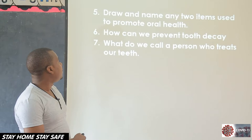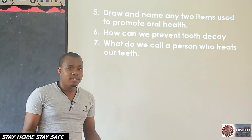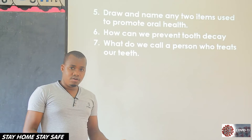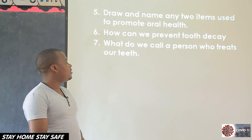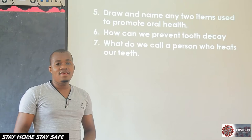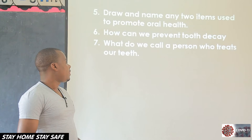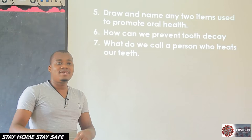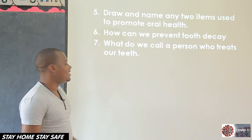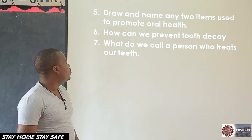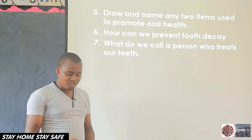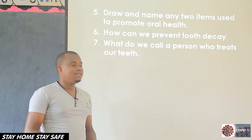Number five: draw and name any two items used to promote oral health. I expect someone to have drawn a toothbrush, toothpaste, dental floss, or a toothpick. Number six: how can we prevent tooth decay? By brushing teeth every day, or daily, or after every meal. You must also use toothpaste, because it is the one that kills the bacteria. What do we call a person who treats our teeth? That person is called a dentist. Can we spell dentist? D-E-N-T-I-S-T. Dentist.